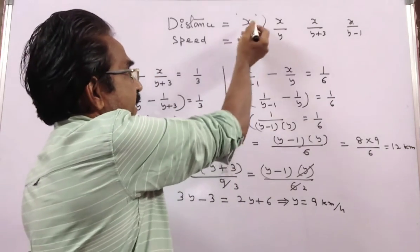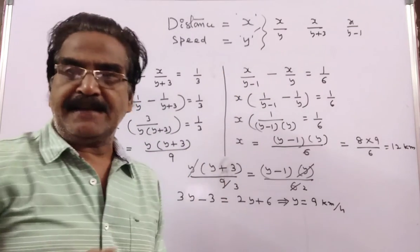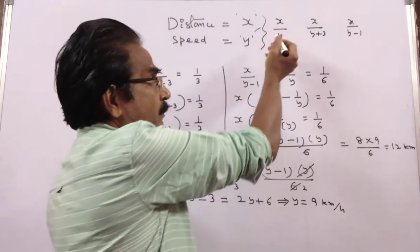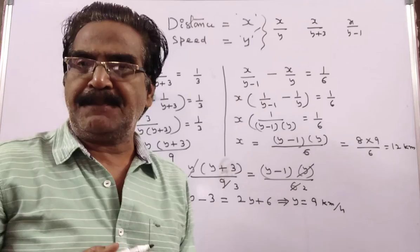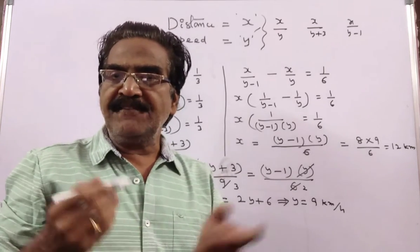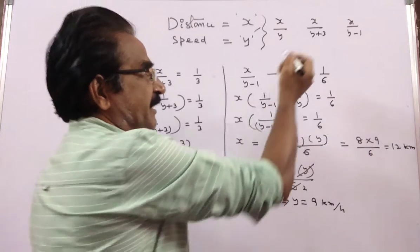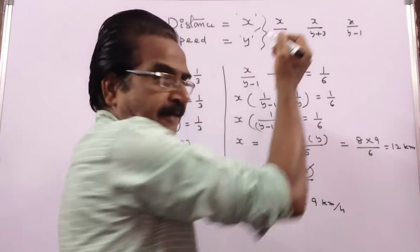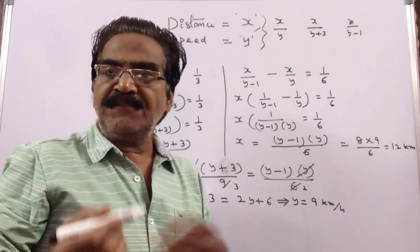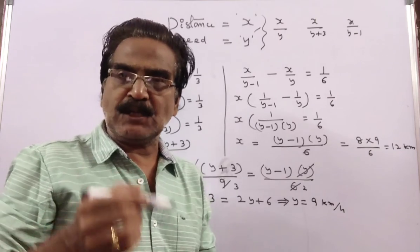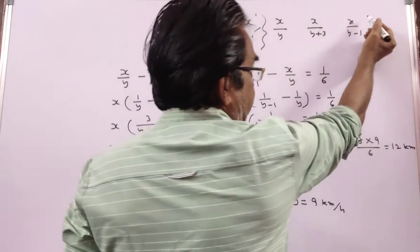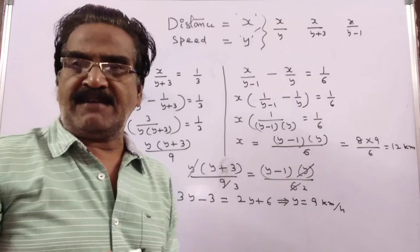Let's say distance is x and speed is y. Then the normal time is x by y. If he moves at 3 kmph faster, then the time taken will be x by (y plus 3). If he moves at 1 kmph slower, then the time taken will be x by (y minus 1).